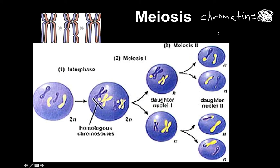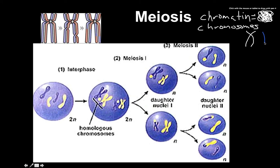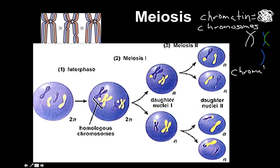DNA will then condense into what we call chromosomes. A chromosome is an X-like structure — DNA that's highly condensed. If you draw it well, it looks more like this: still kind of an X shape but there are definitely two halves to it. One of those halves of DNA is called a chromatid — chromatid with a 'D' — so half of that chromosome is a chromatid.